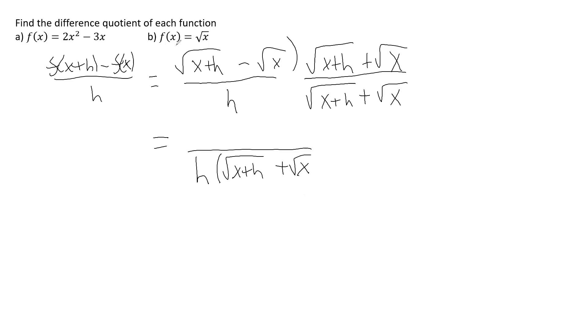And the numerator, really, we're going to foil these out. When you foil this with the firsts, you get x plus h, because square root of x plus h times square root of x plus h would be square root of x plus h quantity squared. Square and the square root cancel each other out.